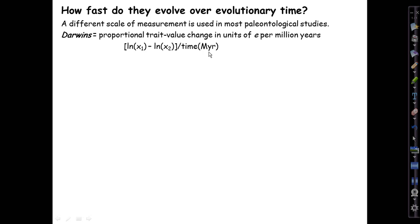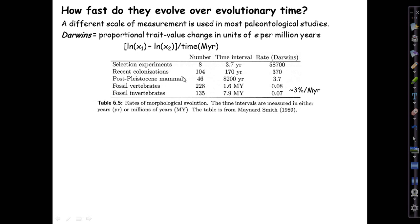This is more appropriate to large amounts of change that might take place over many thousands or millions of years, and it doesn't require that you have a good estimate of the standing variation for the trait in order to make the estimate, which the Haldanes unit does require. Here's a table showing the pattern, which is extremely striking.